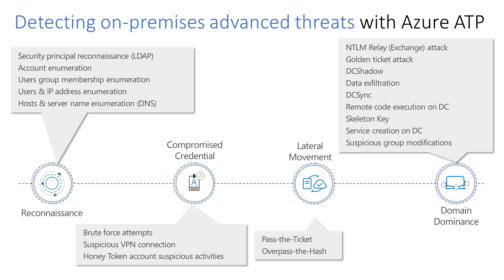The next link in the kill chain is when an attacker attempts lateral movement throughout the environment. One way they do this is through pass the ticket — a lateral movement technique where attackers steal a Kerberos ticket from one computer and use it to gain access to another by reusing that stolen ticket. In Azure ATP's detection, a Kerberos ticket is seen used on two or more different computers. Ultimately, attackers want to establish domain dominance, and one method is using DC Shadow — an attack designed to change directory objects using replication from any machine by creating a rogue domain controller. Azure ATP triggers an alert when a machine in the network tries to register as a rogue domain controller.